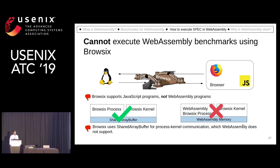But we cannot use Browsix to execute WebAssembly benchmarks because it supports JavaScript, and the way communication between each process and the kernel happens is using shared array buffer. Unfortunately, WebAssembly does not support that shared array buffer.